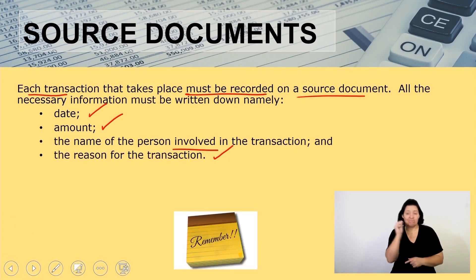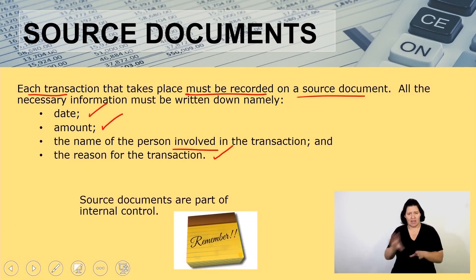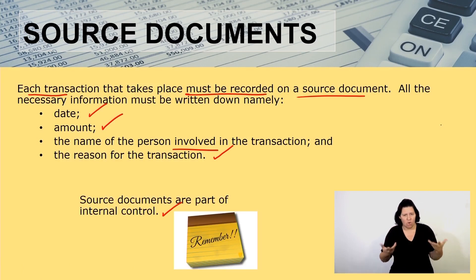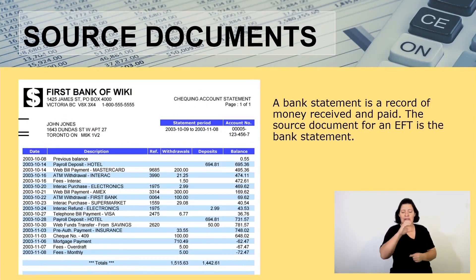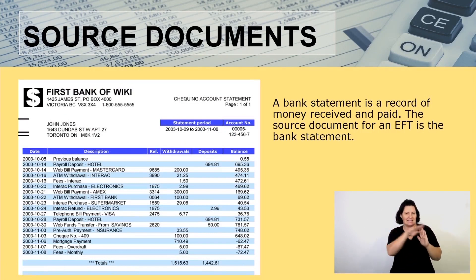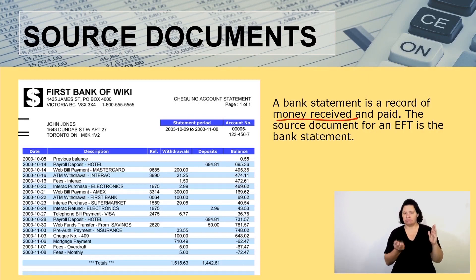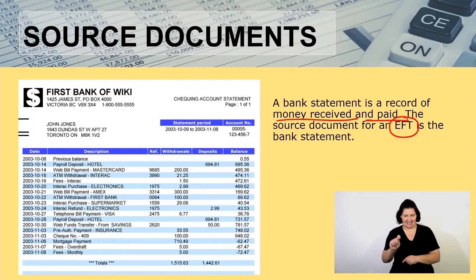Let me remind you that source documents are part of internal control for a business. The source document we are going to be working with when doing our CPJ is mostly a bank statement. This is a record of money received and paid, and in most cases the business will be using EFTs — electronic funds transfer.